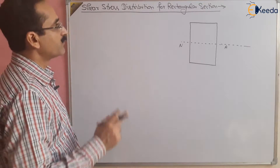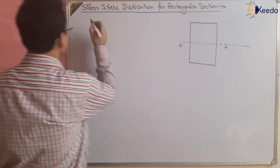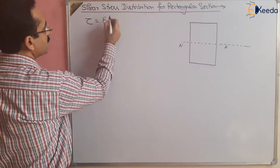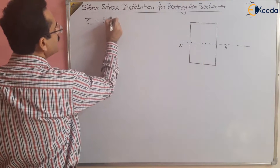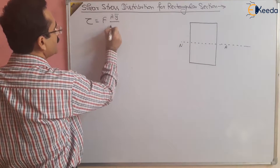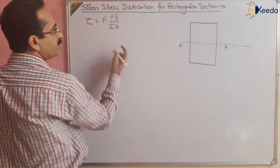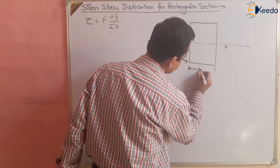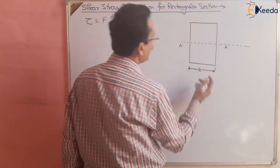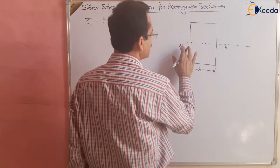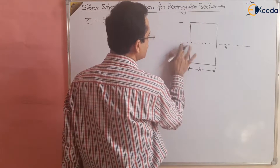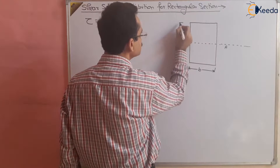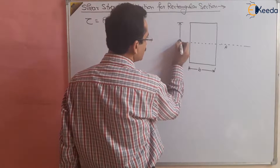Now, you know the formula. What is the formula for shear stress distribution? Tau is equal to F, which is the shear force on this section, multiplied by Aȳ, divided by Ib, where B is the width of this section. And suppose the depth is also given — D is the depth or height of this section.